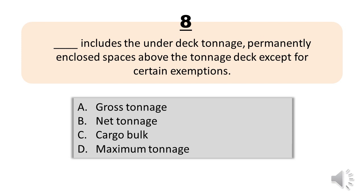Number 8. Blank includes the under-deck tonnage, permanently enclosed spaces above the tonnage deck except for certain exemptions. A. Gross tonnage. B. Net tonnage. C. Cargo bulk. E. Maximum tonnage. The correct answer is Letter A. Gross tonnage.